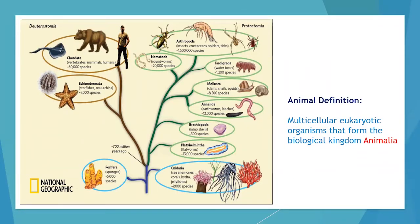Before we go any further, we need to be on the same page about what an animal is. Animals are multicellular eukaryotic organisms that form the biological kingdom Animalia, and technically this does include humans. The kingdom Animalia is actually very diverse — we have flatworms (platyhelminths), annelida, mollusks such as clams and snails, roundworms, and of course vertebrates, which can include animals such as bears. Using a One Health approach, we do generally consider humans to be separate.